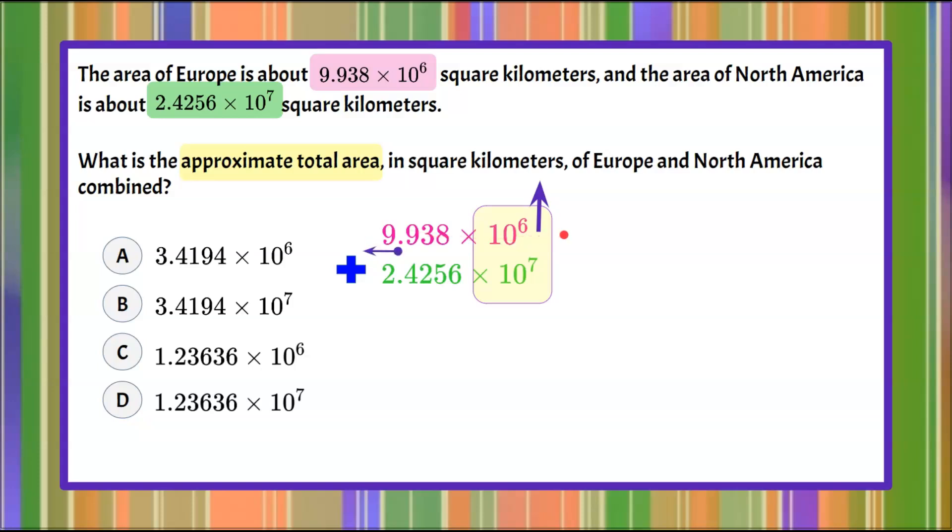Let's rewrite that. We're going to move the decimal to the left one place and increase the exponent. Now we have 0.9938 × 10^7. This value gets smaller by one decimal place while the exponent increases by one.